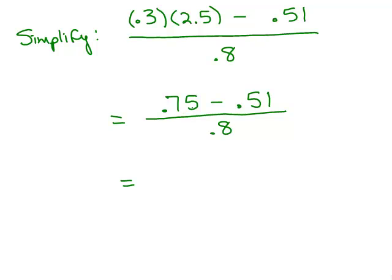Next step, I have to subtract in the numerator. So I'm going to line up decimal points. 0.75 minus 0.51 is 0.24. So 0.24 over 0.8.